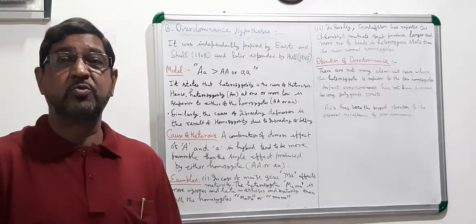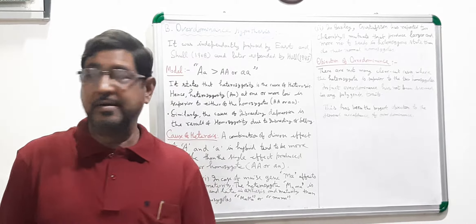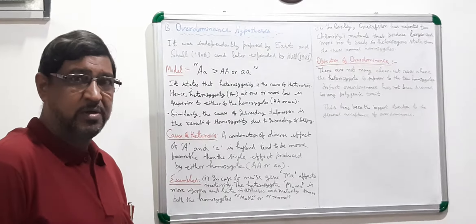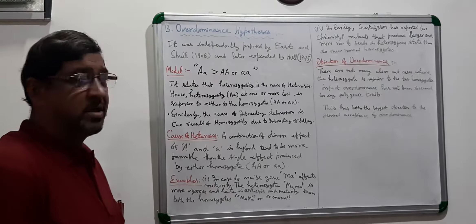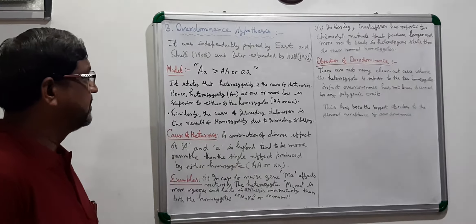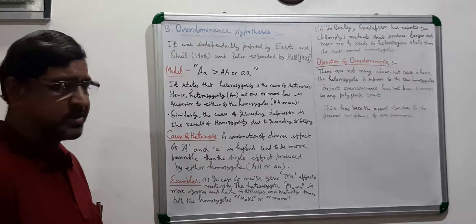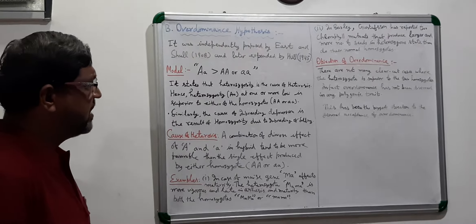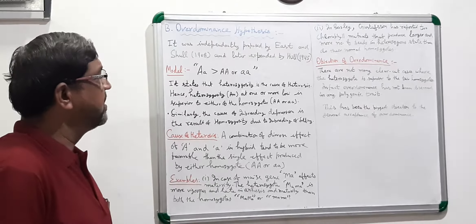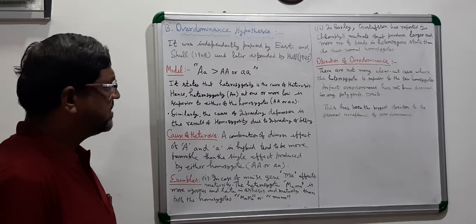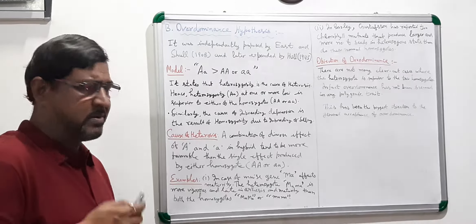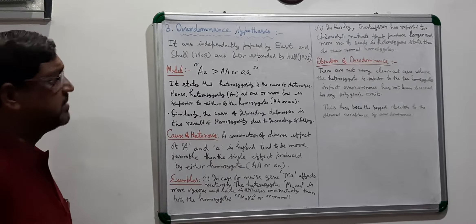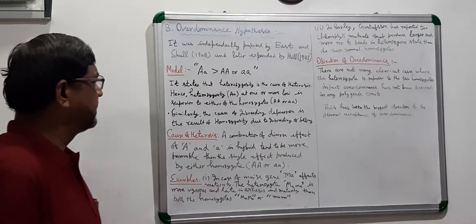Welcome dear students. Today I'm going to deal with the Over Dominance Hypothesis of heterosis. As you know, it was independently proposed by East and Shull in the year 1908, and later expanded by Hull in 1945. Many more workers have supported this Over Dominance Hypothesis.